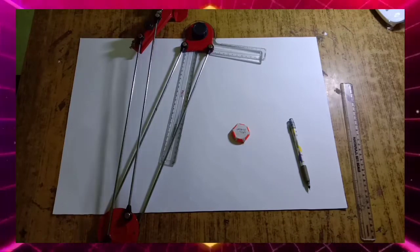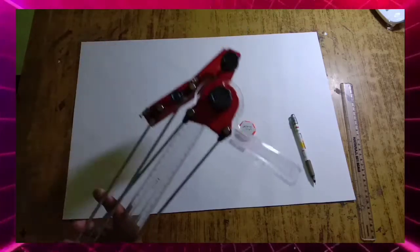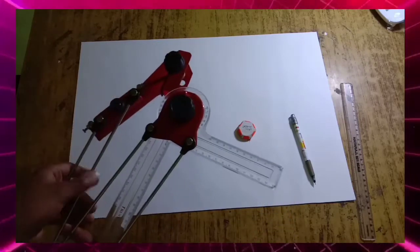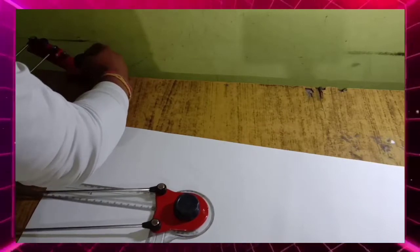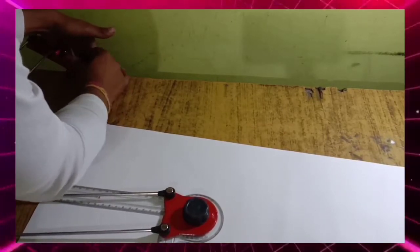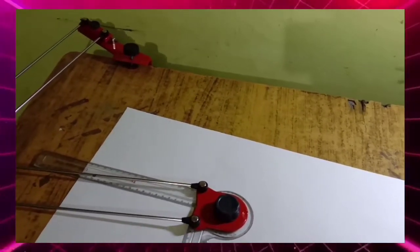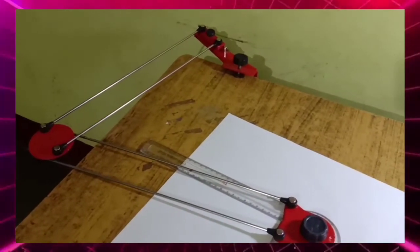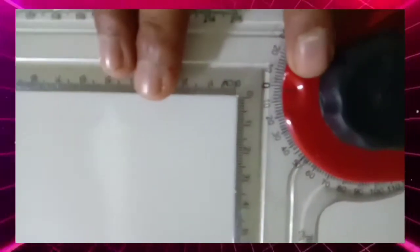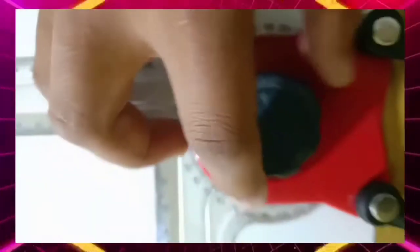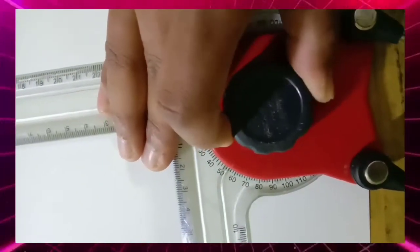Today we will discuss how to attach the drawing sheet on the table. First of all, we attach the drawing sheet from this side on the edge of the table like this, and set the scale at zero degrees, then tighten its knot so the scale does not move.